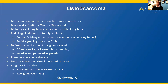Osteosarcoma is the most common non-hematopoietic primary bone tumor, with a bimodal age distribution in patients younger than 20 and greater than 60 years of age. It generally occurs in the metaphysis of long bones, often around the knee, but can affect any bone. Radiographically, osteosarcoma is generally an ill-defined tumor with mixed lytic and blastic radiodensities. Osteosarcoma may be associated with a Codman's triangle, which occurs when the periosteum is elevated or lifted by an advancing tumor front. Osteosarcomas grow rapidly, in contrast to conventional chondrosarcomas, which are generally more indolent and slower growing.